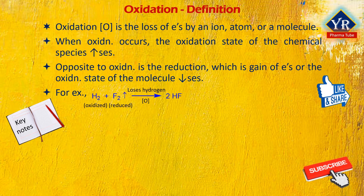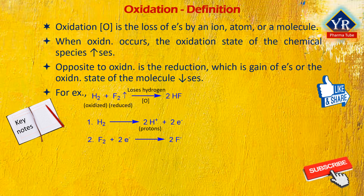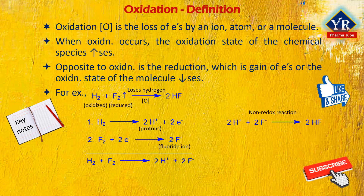The reaction may be better understood if it is written in terms of two half reactions. The first half reaction states that the oxidation reaction converts hydrogen to protons. The second reaction is the reduction reaction which converts fluorine to the fluoride anion. The half reactions are combined so that the electrons cancel. The protons and fluoride combine to form hydrogen fluoride in a non-redox reaction. The overall reaction is: hydrogen plus fluorine gives rise to hydrogen fluoride.